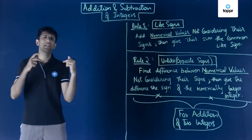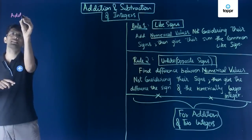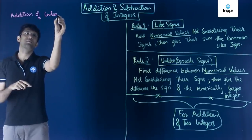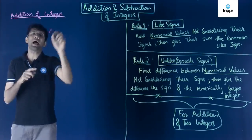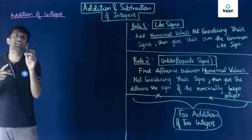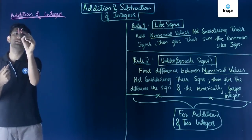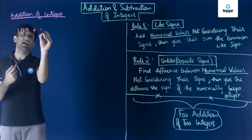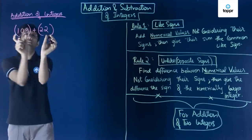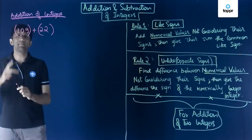When two integers are added, we are looking at addition first. The first operation we will look at is addition of integers. Whenever we add two integers, we get at least four cases. The first case is when both integers are positive — for example, 109 and 22. Both these integers are positive numbers and they are being added.